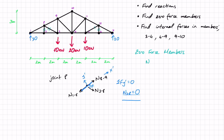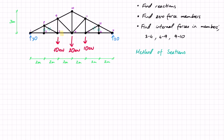To summarize: N2-8 equals N3-8 equals N6-12 equals N5-12 equals zero. With reactions found and zero force members identified, we can move on to the method of sections. Finding the zero force members hasn't impacted our task since none of the three members we need to find are zero force members.